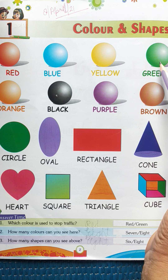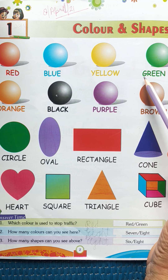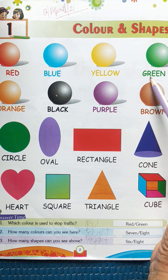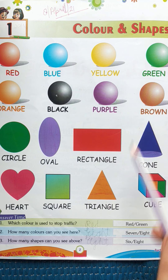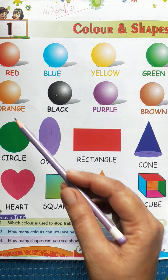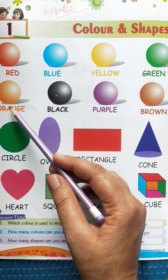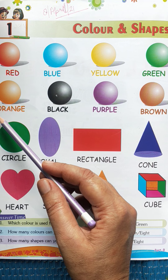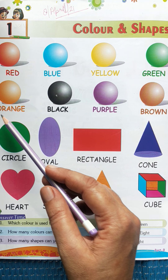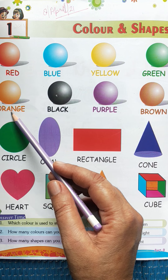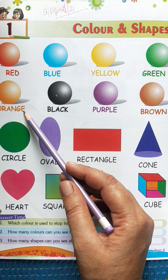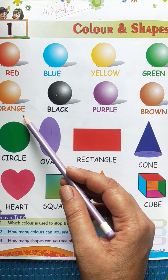This is color green and spelling is G-R-E-E-N, green. Next, color is orange. Spelling is O-R-A-N-G-E, orange.